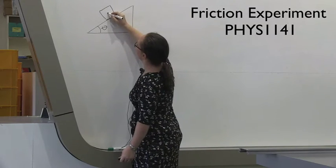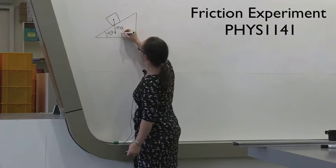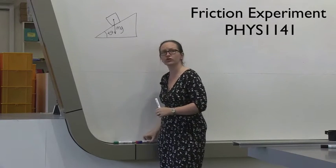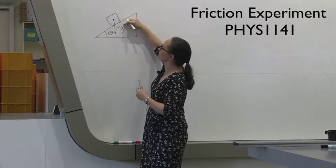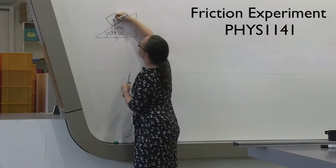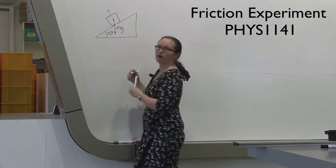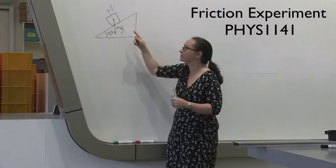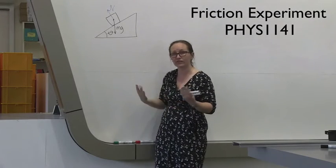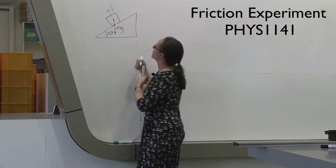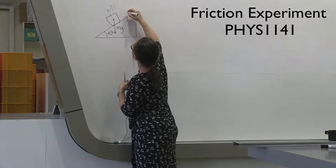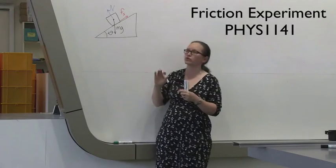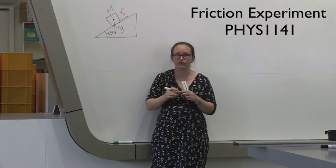Firstly, I've got the weight force, mg, which is acting vertically downwards. I've also got a normal reaction force between the plane and the box, so this acts upwards, perpendicular to the plane. Finally, if this box is not moving, I've got a static friction force, so this is acting parallel to the plane in this direction. If the box was sliding, this would be a kinetic friction force.